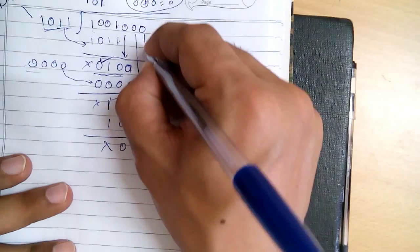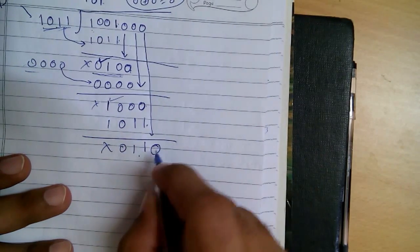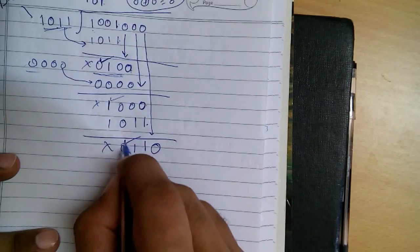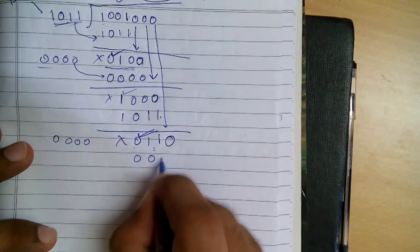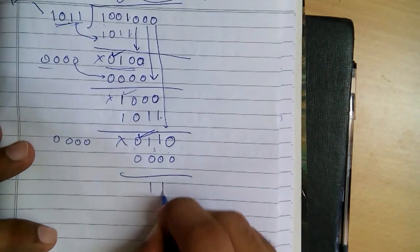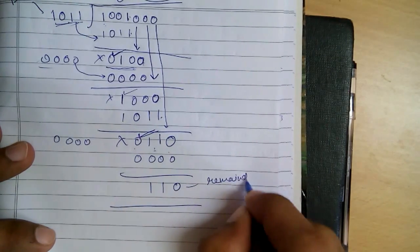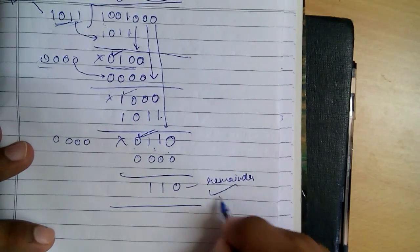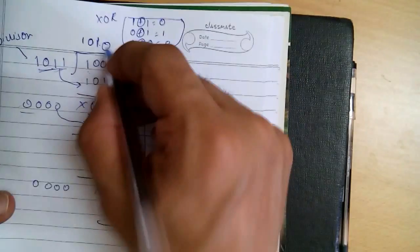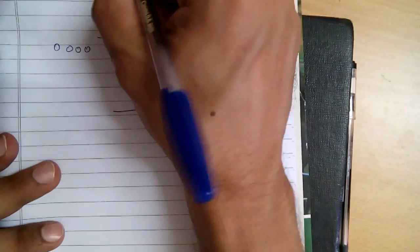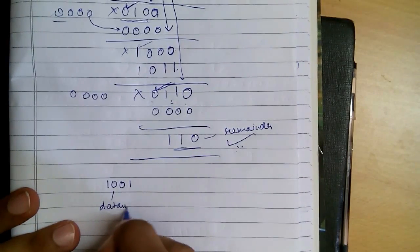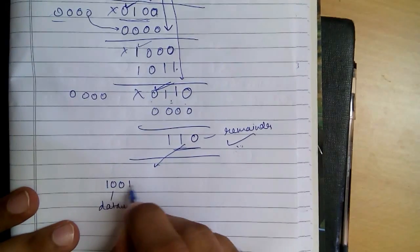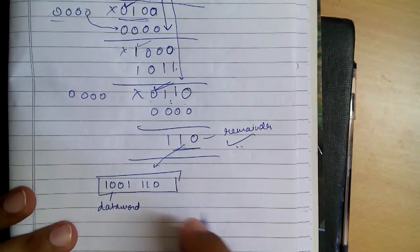Now this 0 comes down. Since the first bit is 0, just put 0 in the quotient and divide by 0 0 0 0, giving 0 0 0 0. Performing XOR again we get the remainder, which is the redundant bits we append after the data word. Our data word was 1 0 0 1 and the remainder we got is 1 1 0, so our code word is 1 0 0 1 1 1 0, which we will send.